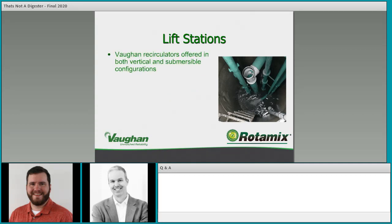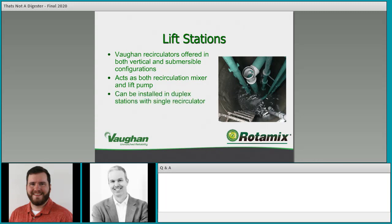For smaller stations, Vaughan recirculators are offered in both vertical and submersible configurations. These can be used for small and drop-in stations with a reliable application — acting as both the recirculation mixer and the lift pump. You can provide a cycle of recirculation mixing to agitate and bring everything into suspension, then switch to pump-out as normal lift station operation. It can be installed as a duplex station with a single recirculator for redundancy.